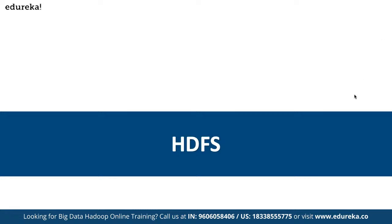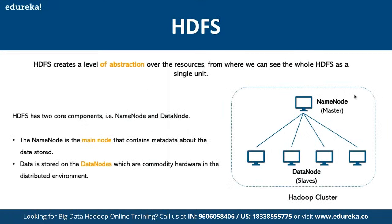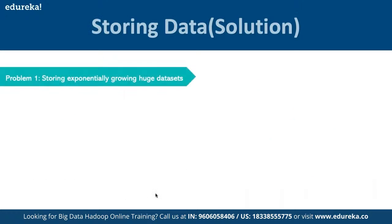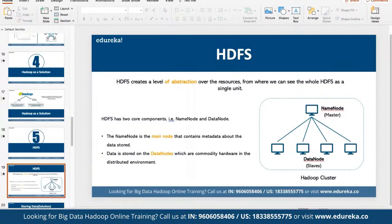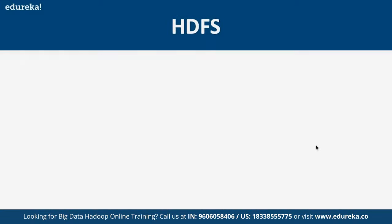HDFS is a distributed file system. We can create a level of abstraction over resources so that the whole HDFS appears as a single unit. HDFS has two core components: the Name Node and the Data Node. The Name Node is the main node that contains metadata about the stored data. Data Nodes are commodity hardware in the distributed environment. Multiple systems work in parallel for data processing.